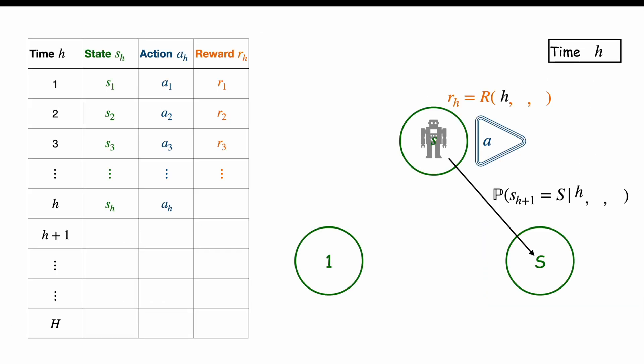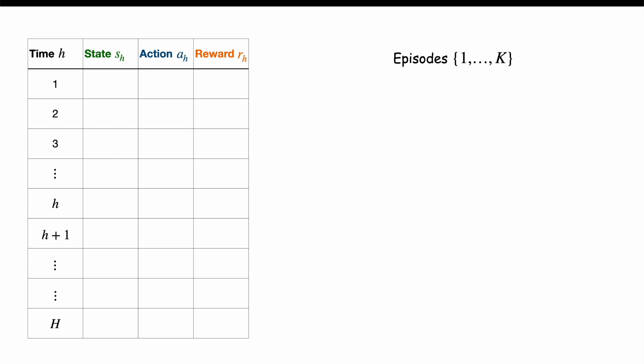We will use them to find an optimal strategy pi star. In our model, the transitions and rewards depend also on the time H. So if at time H the agent is at state S, we cannot evaluate the quality of action A since we have no information on the reward at time state and action HSA. So we cannot choose a best action. That's why in RL we have episodes.